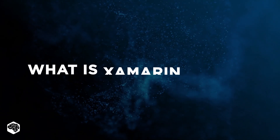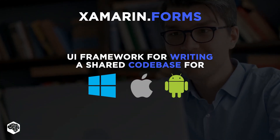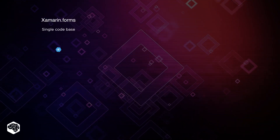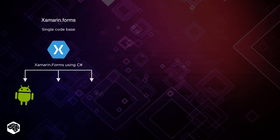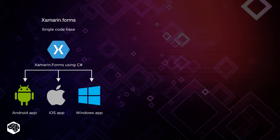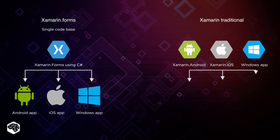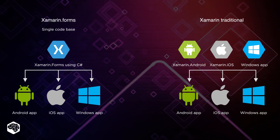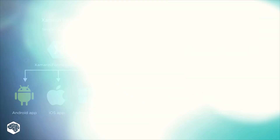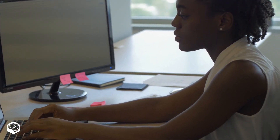Let's start with the first competitor. What is Xamarin.Forms? Xamarin.Forms is a UI framework for writing a shared codebase for Windows, iOS, and Android apps. The application is not adapted to each platform specifically. It's faster to develop and cheaper. However, developers only have to write one code version and can reuse it with minor changes. Xamarin uses the .NET platform and C#.